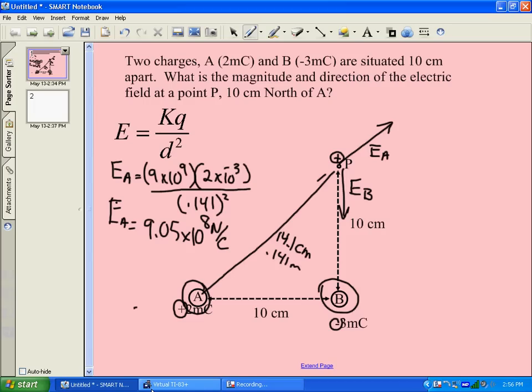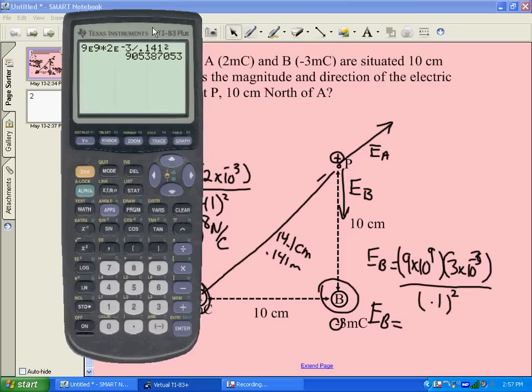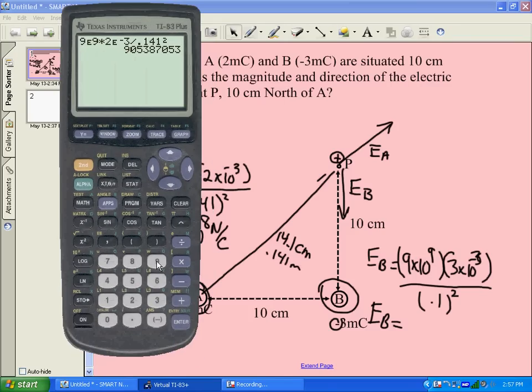Work out what its electric field would be. So 9 times 10 to the 9. The charge is 3 millicoulombs times 10 to the negative 3. Divide by that distance squared. And so if we work out its charge, we'll now bring up the calculator again. So we've got 9 exponent 9, times 3 times 10 to the minus 3, divided by 0.1 squared. And you get 2.7 times 10 to the 9.